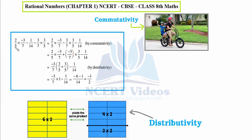We can see that 2/5 is multiplied by −3/7, and we also have −3/7 multiplied by 3/5. If we shift the complete portion −3/7 × (3/5) to the side of 2/5 × (−3/7), that is called commutativity, and the value of the whole expression does not change. So we write 2/5 × (−3/7) as it is, then shift −3/7 × (3/5) next to it, and the remaining term is −1/14.